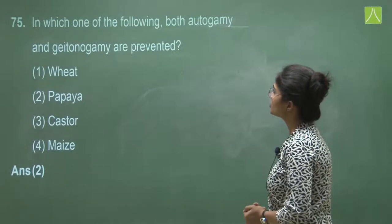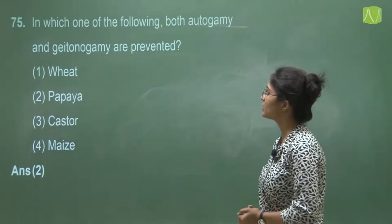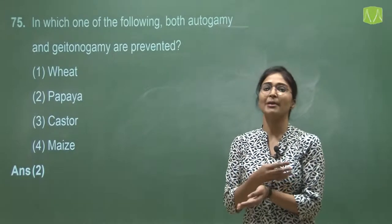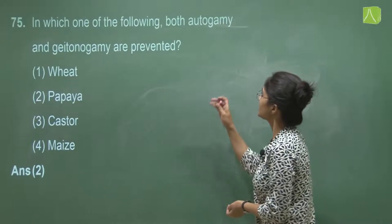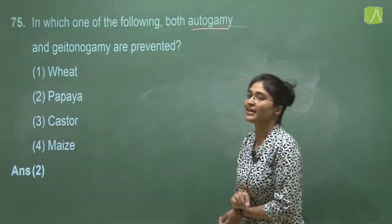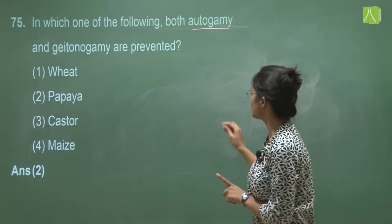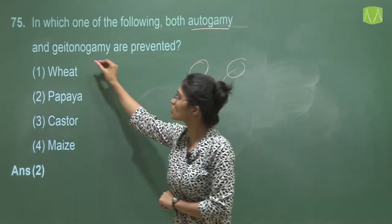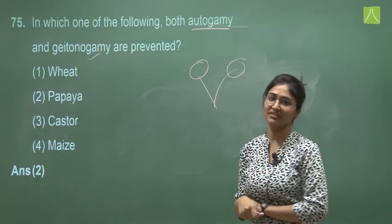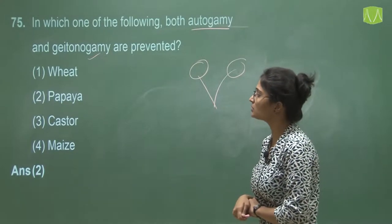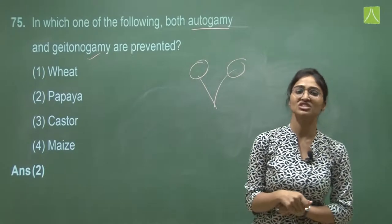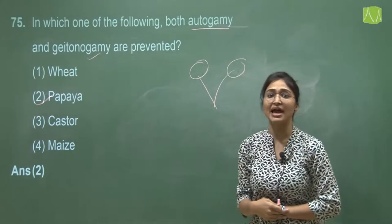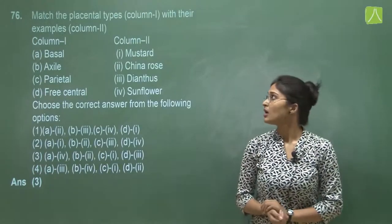Question 75 asks in which plant both autogamy and geitonogamy are prevented. Autogamy is when a single flower's female part is pollinated by its own male part. Geitonogamy is when two flowers on the same plant are involved. The options are wheat, papaya, Castor, and maize. Papaya has male and female flowers on different plants, so it cannot have autogamy or geitonogamy. The correct answer is papaya.